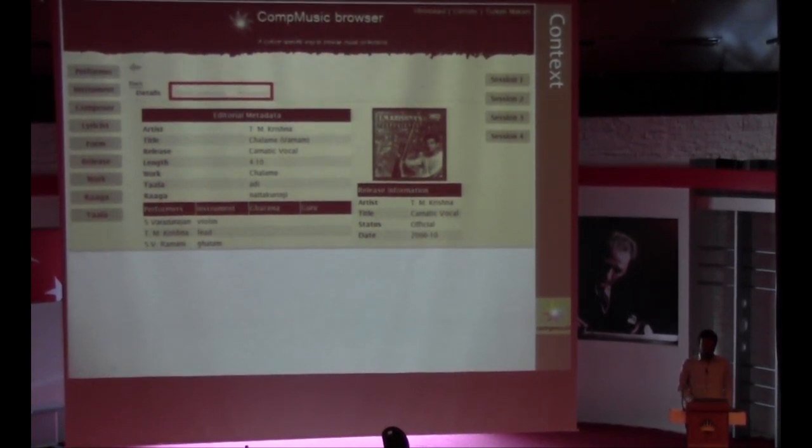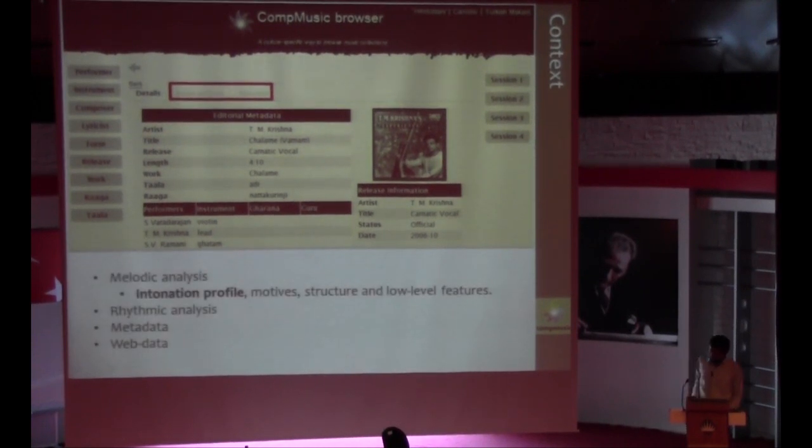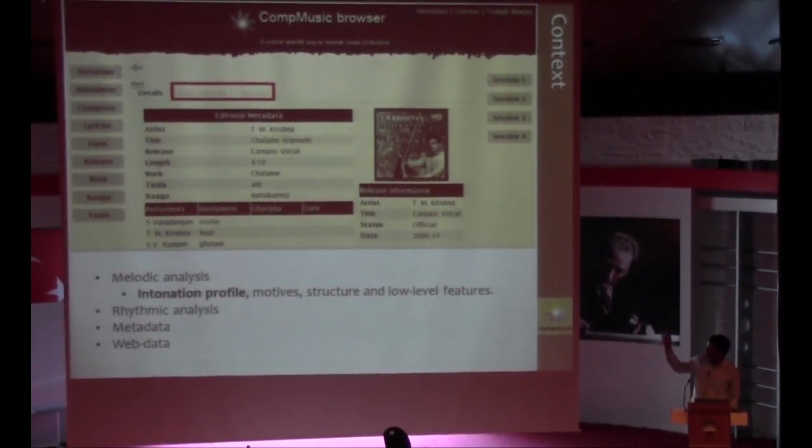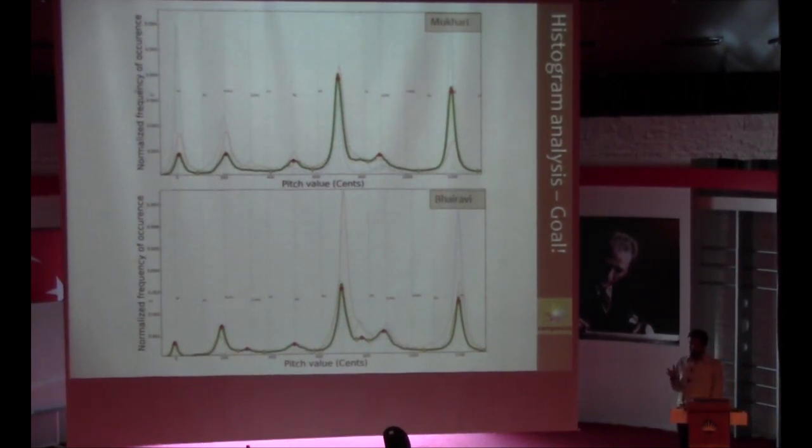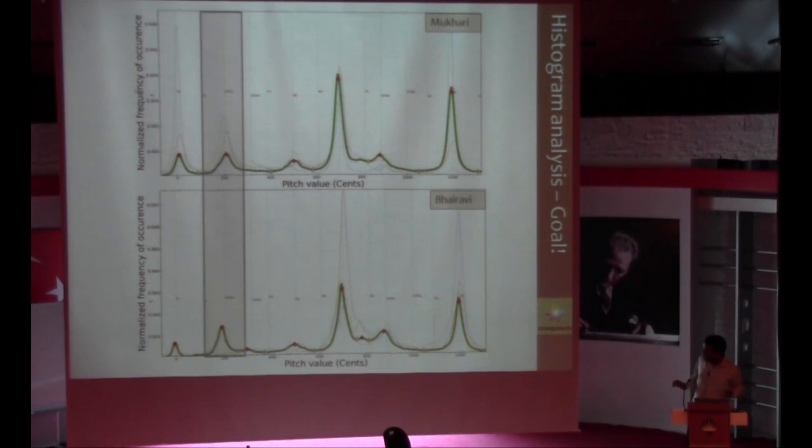To further place it in the global context of the work we are doing, these are the four important sources of information that contribute to the browser: melodic analysis, rhythmic, metadata and web data. And intonation profile is part of the melodic analysis. There is a very good amount of manual intervention in the previous works done by Levi and Swathi. The purpose of this work is to obtain a compact representation of intonation. So given two swaras like two distributions of swaras in two different ragas like Bhairavi and Mukhari, they have the same swara but the shape of the swara is distinct. So we want to use this as the intonation profile of the swara.